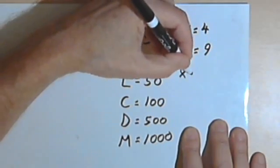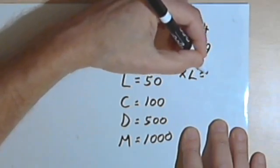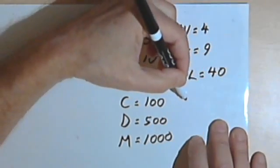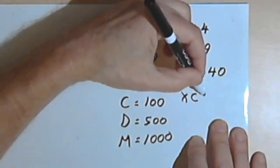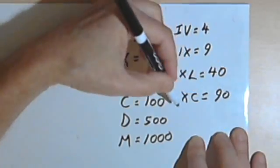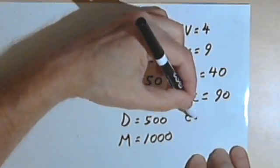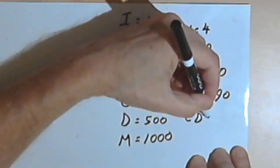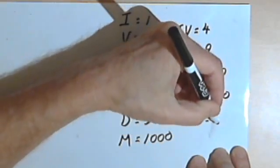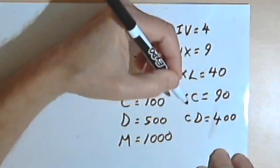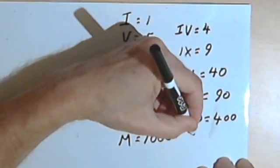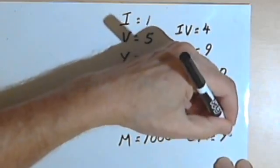If we take 10 from 50, XL, we'll get 40. If we take 10 from 100, XC, we've got 90. We could take 100 from 500, so C in front of the D will be 400. And if we want 900, that would be 100 less than 1000, so it would be CM, and that would equal 900.